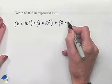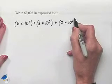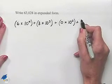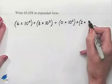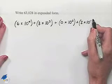we have our next digit, 0, multiplied times 10 squared, plus our next digit, 2, multiplied times 10 to the first, and